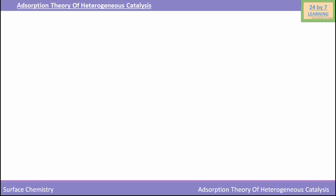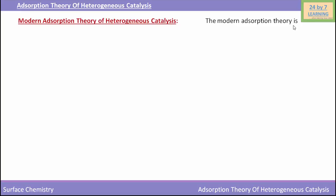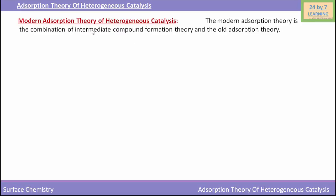The reactant molecules are adsorbed on the surface of the catalyst. Their bonds are weakened and the reaction can proceed quickly because the bonds are more quickly broken. Catalysis can also be explained on the basis of intermediate compound formation. The modern adsorption theory is the combination of intermediate compound formation theory and the old adsorption theory.